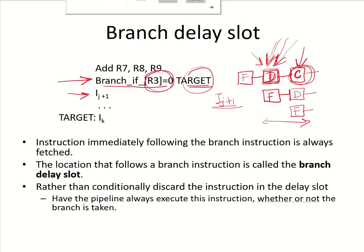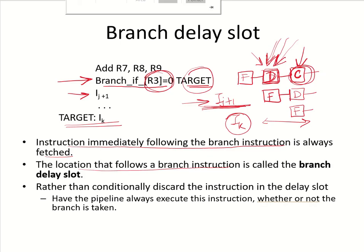If the branch is not taken, then i(j+1) will be executed. If the branch is taken, then we have to fetch the target address i(k). So in any case, even if the branch has to be taken, i(j+1) has already been fetched. This means the instruction which immediately follows the branch instruction is always fetched, and this location is called the branch delay slot.